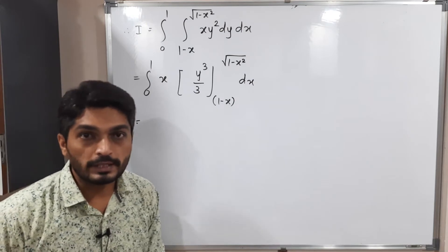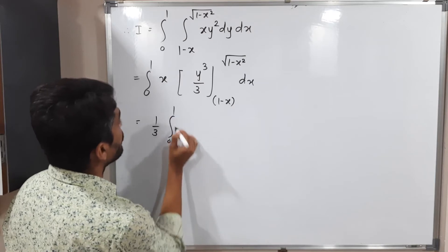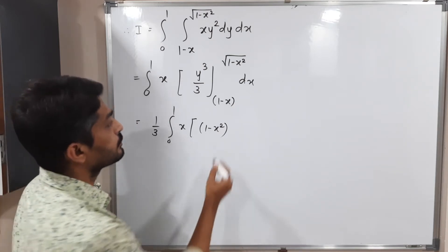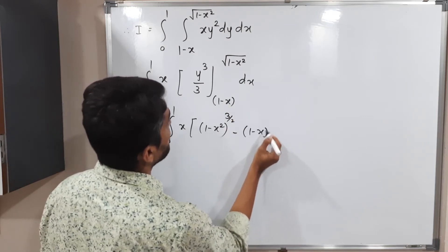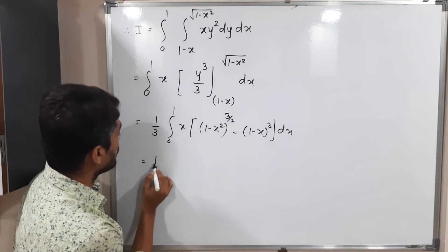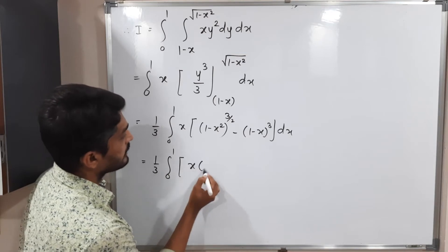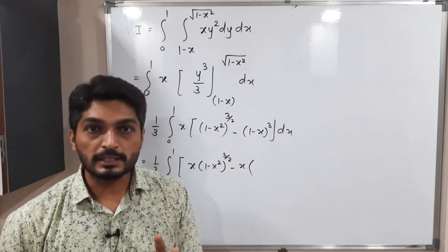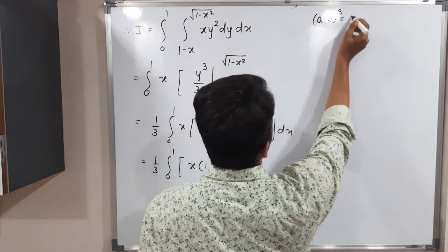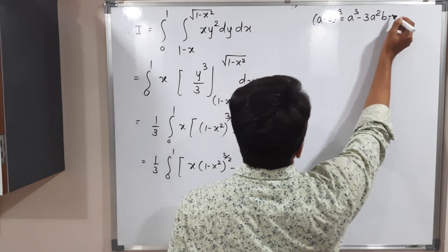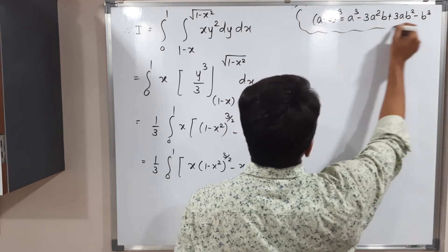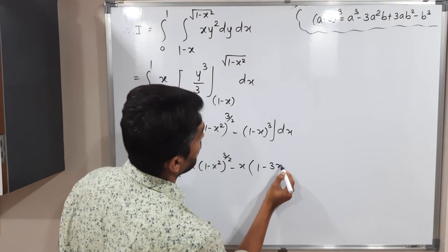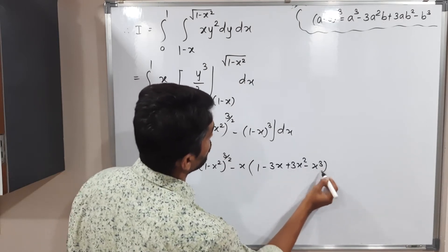We take the constant 1/3 outside. So we have (1/3) ∫₀¹ x · [(1 minus x²)^(3/2) minus (1 minus x)³] dx. Now to expand (1 minus x)³, we use the formula (a minus b)³ = a³ minus 3a²b + 3ab² minus b³, with a = 1 and b = x: 1 minus 3x + 3x² minus x³.